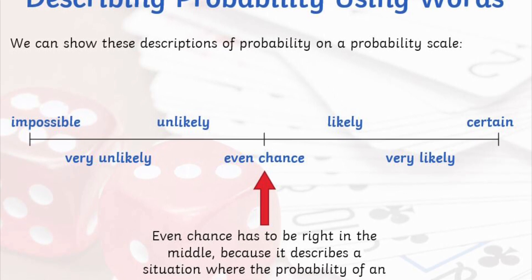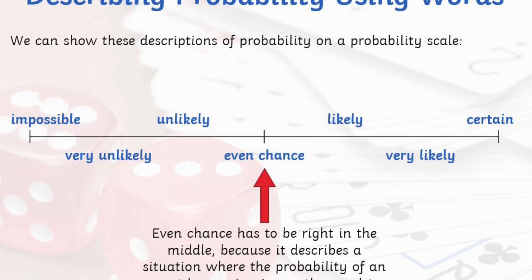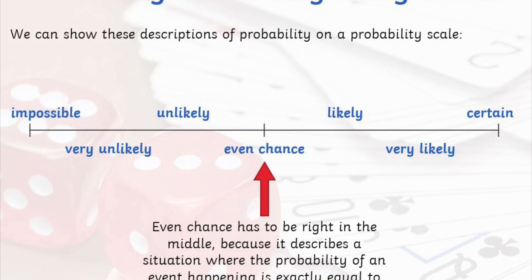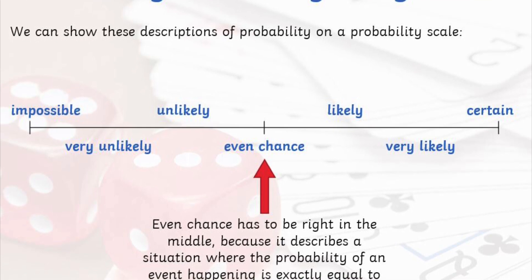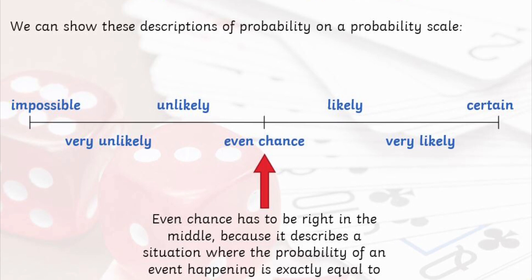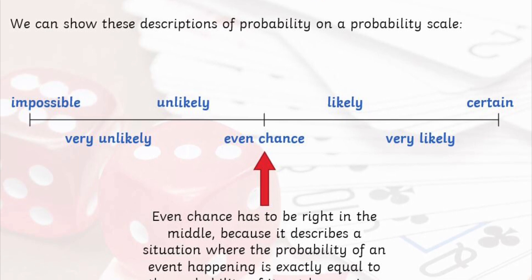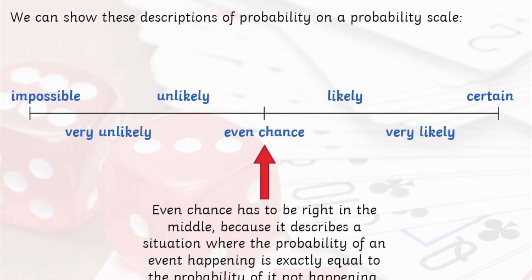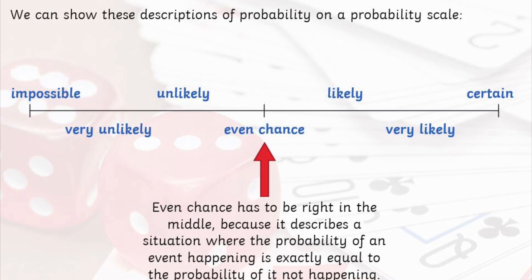On the other end of this scale, I have certain, and this is where an event is 100% going to take place or has taken place. For example, I am certain that there is an M in the word Monday. Then we have a range of vocabulary used to describe the different positions on the scale in between impossible and certain.